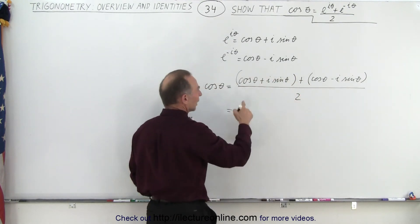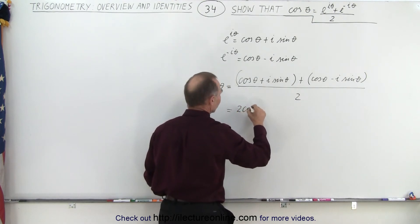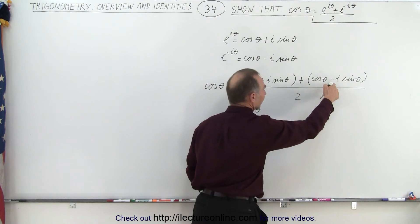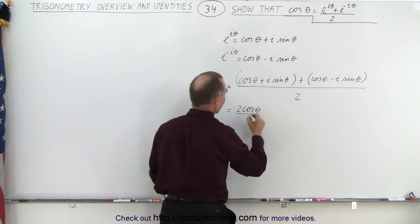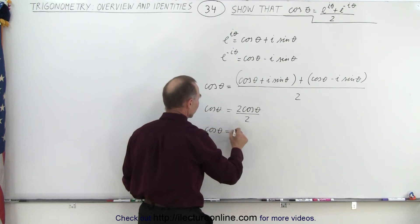And then if we take a look at the numerator we have the cosine of theta plus the cosine of theta which is two times the cosine of theta, and we have i sine theta minus i sine theta which cancels out, divided by two.